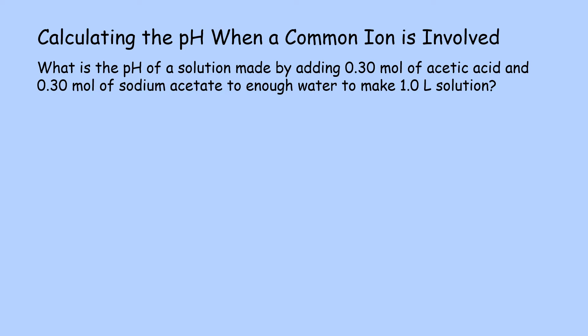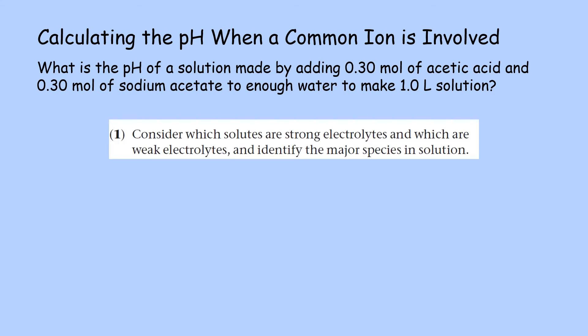Knowing this, the next thing that we need to do is to plan on how we are going to solve it. In any problem in which we must determine the pH of a solution containing a mixture of solutes, it is helpful to proceed by a series of logical steps. I have outlined here four steps in our planning stage on how we are going to solve for this problem.